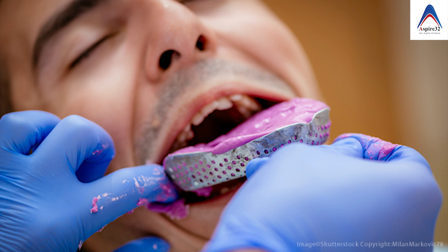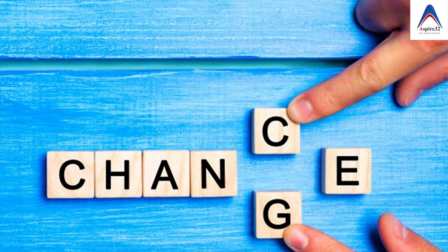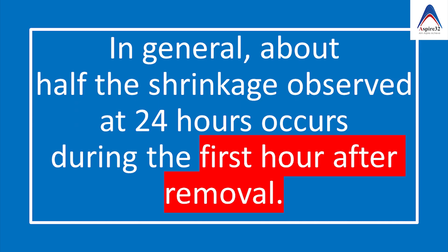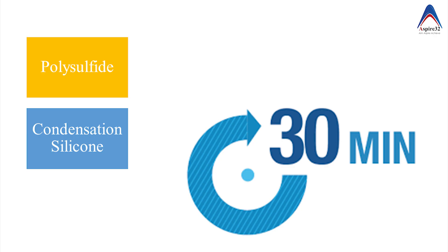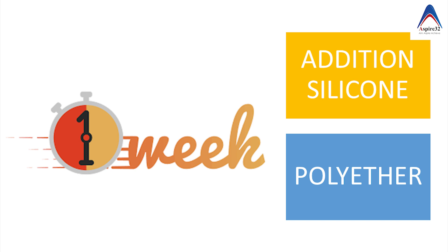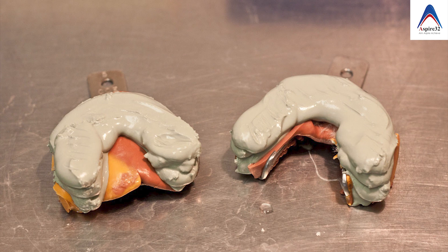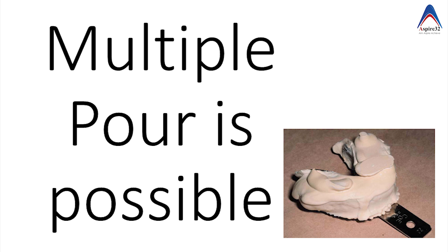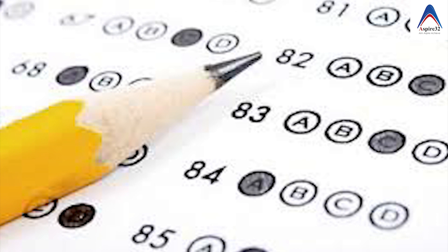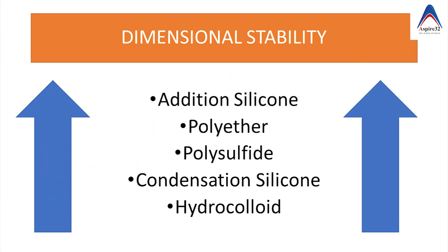Polysulphide and condensation silicone have poor dimensional stability, and maximum shrinkage happens within the first hour of making the impression. To overcome this, you should pour the impression within 30 minutes if made from condensation silicone or polysulphide. Addition silicone and polyether are more dimensionally stable, allowing you to pour them even after one week. You can also do multiple pours with these dimensionally stable materials. Of all elastic impression materials, addition silicone is most dimensionally stable, and condensation silicone is the least stable in the elastomeric category, while hydrocolloids are the least stable overall.